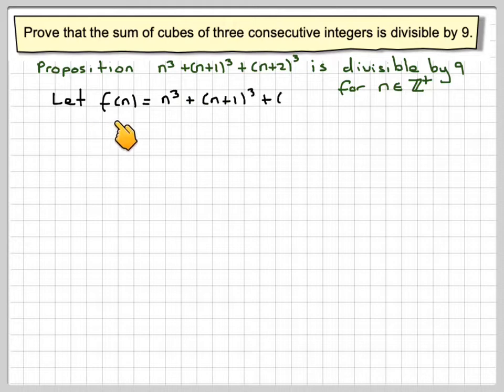If we let f of n be equal to the sum of our proposition, so f of n is equal to the function n cubed plus n plus 1 cubed plus n plus 2 cubed.